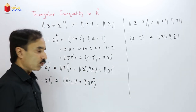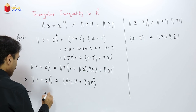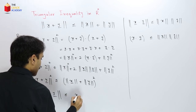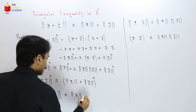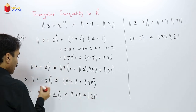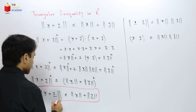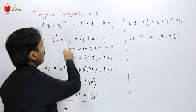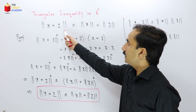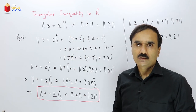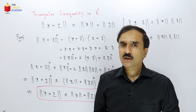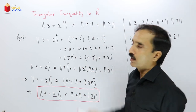If we take the square root on both sides, we get ‖x+y‖ ≤ ‖x‖ + ‖y‖. This is our required proof — the proof of the triangular inequality. This shows that the triangular inequality also follows from the concept of inner product or dot product in a Euclidean space or an n-dimensional vector space Rⁿ.